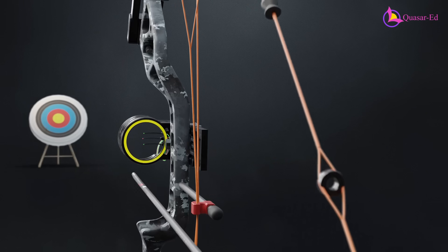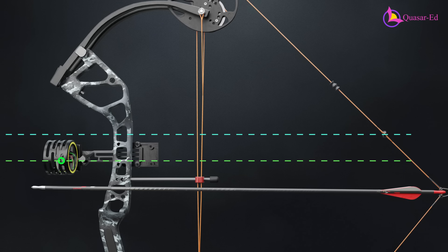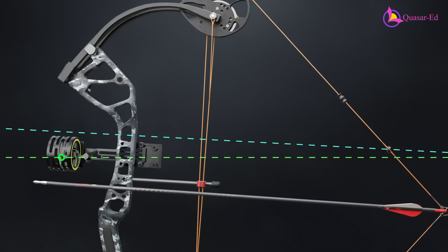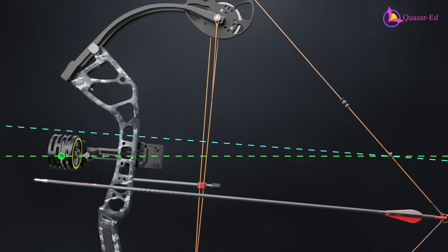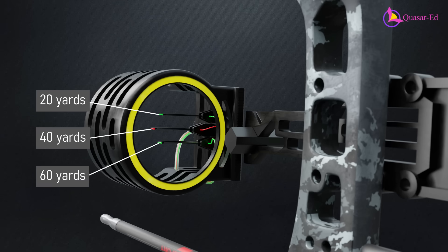When aiming, you align the peep sight with a sight pin and the target. The specific sight pin used determines the bow's angle. Lower pins create a higher upward angle, allowing the arrow to travel farther. This is why the lowest sight pin is set for the longest distance, while higher pins correspond to shorter distances.